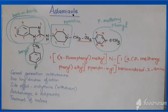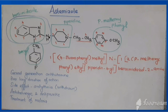The next drug is astemizole. It is having a benzimidazole nucleus — benzene fused with imidazole. In the second position, it is having an amine, so the parent for astemizole is benzimidazole-2-amine. With the first position, a para-fluorobenzyl group is attached. With the amine nitrogen in the second position, piperidine is attached.